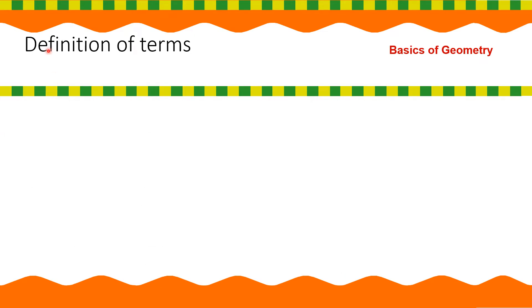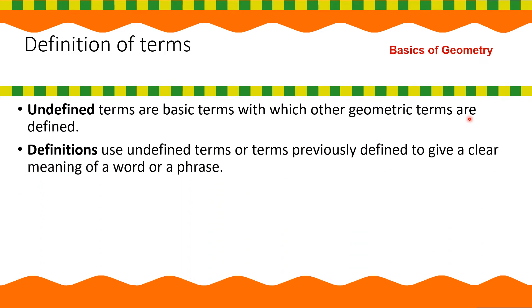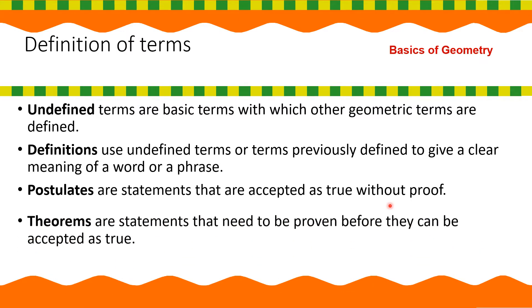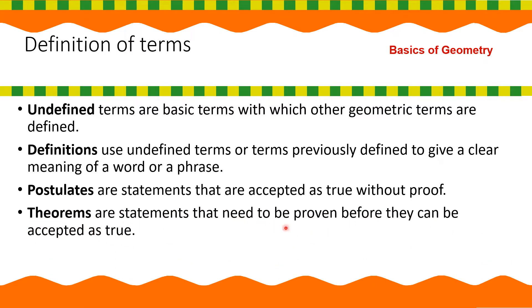Okay, so let's have now some definition of terms. Undefined terms are basic terms with which other geometric terms are defined. Definitions use undefined terms or terms previously defined to give a clear meaning of the word or phrase. Postulates are statements that are accepted as true without proof. Theorems are statements that need to be proven before they can be accepted as true. Guys, these terms are important to know because these are all needed in the next lessons of geometry.